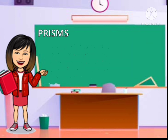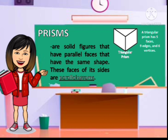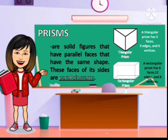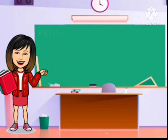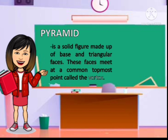The next solid figure is prism. Prisms are solid figures that have parallel faces that have the same shape, and the side faces are parallelograms. A triangular prism has five faces, nine edges, and six vertices, while a rectangular prism has six faces, 12 edges, and eight vertices. Take note: a cube is also a prism. Next, we have pyramid. A pyramid is a solid figure made up of a base and triangular faces. These faces meet at a common point called the vertex.